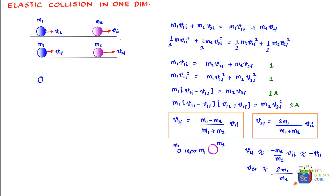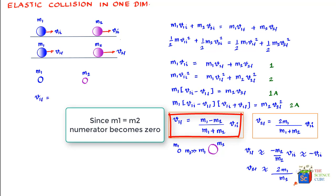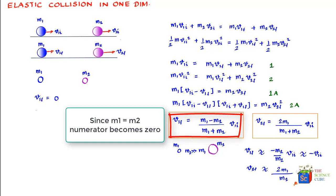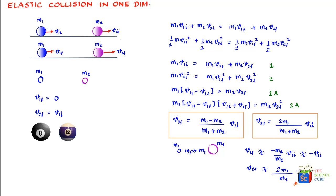Case 2: m1 and m2 are of similar, nearly equal values. In this case, v1_final ≈ 0 and v2_final ≈ v1_initial. A good example is a cue ball in billiards hitting another ball. If the collision is close to elastic, the cue ball comes to a complete stop while the other ball rolls on with the same velocity the cue ball had.